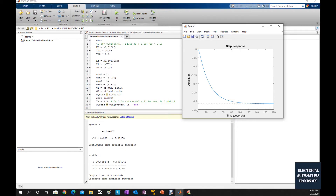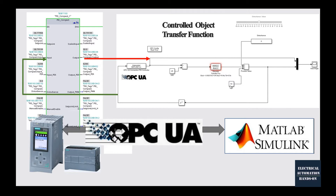From the previous videos, we used MATLAB to set up the script to transfer a process model from S domain to Z domain. Then we used MATLAB Simulink to set up a control loop. In this control loop, we have a process model with the Z domain process model already typed in. We also have a disturbance input, a scope, a simulated feedback representing one sensor feedback, and an interpreted MATLAB function. So here, we need to set up the OPC UA communication between MATLAB and PLC.